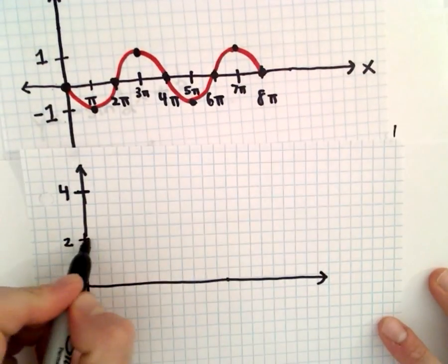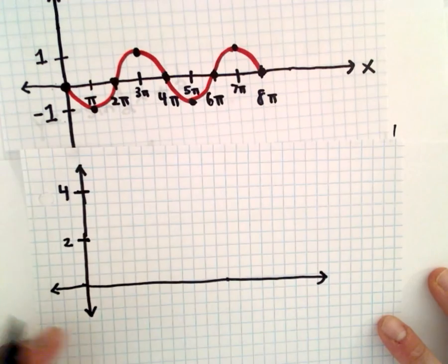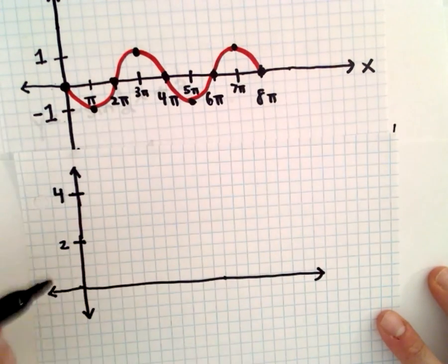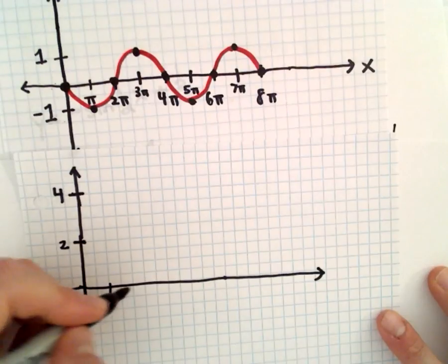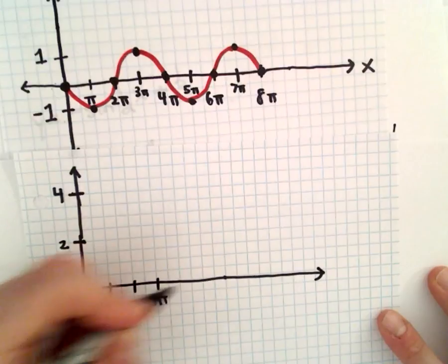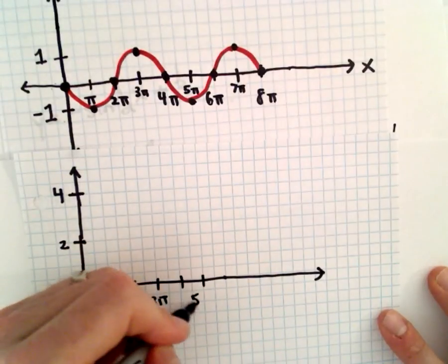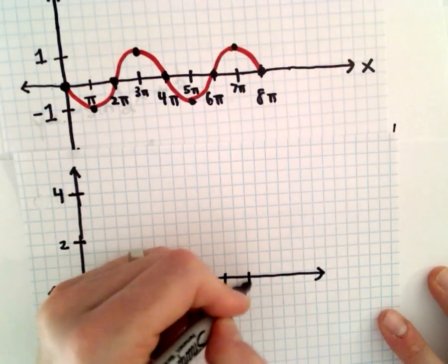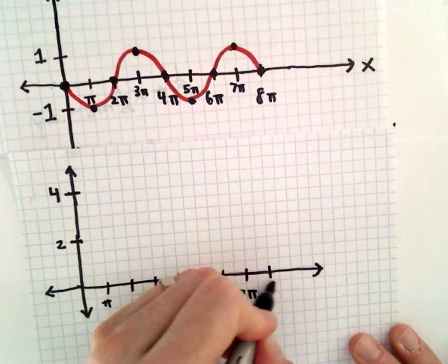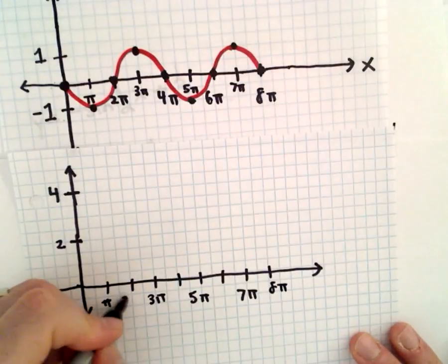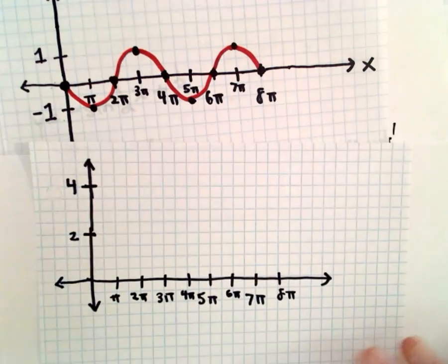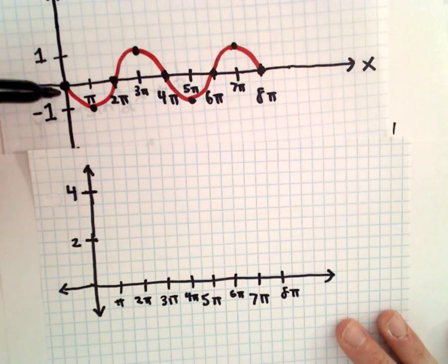So now our new graph will be trapped between the y values of two and four. And then again, the period, everything stays the same. So we've got π, 2π, 3π, 4π, 5π, 6π, 7π, and then 8π there at the end. Okay, and again, just shift everything up by three units.